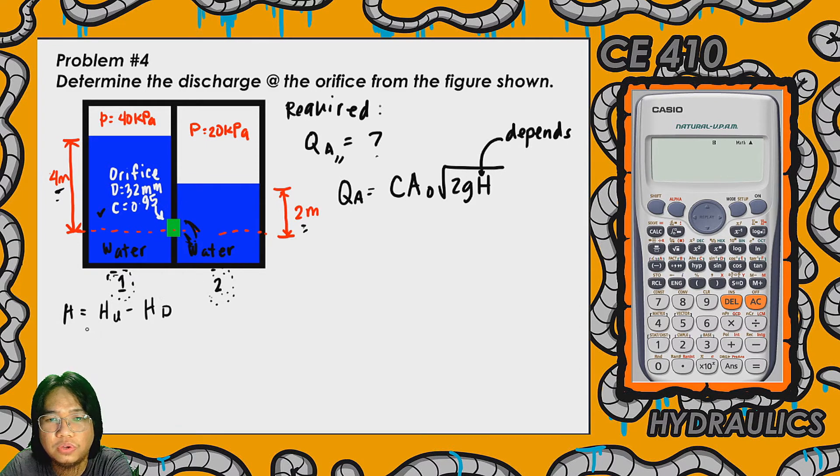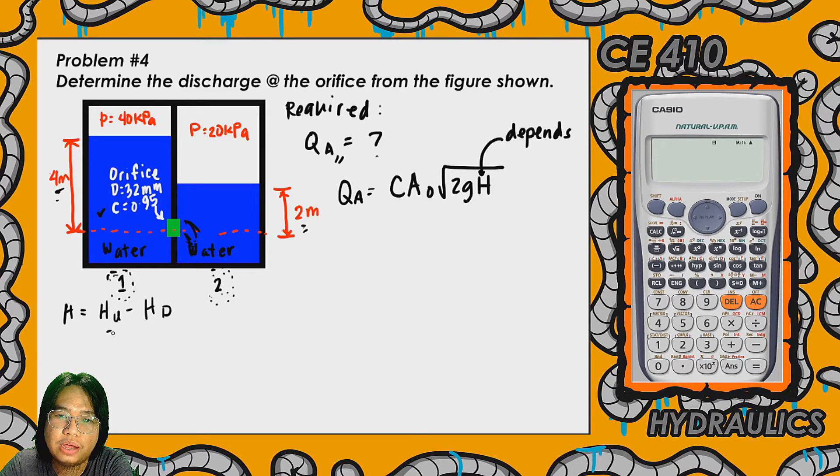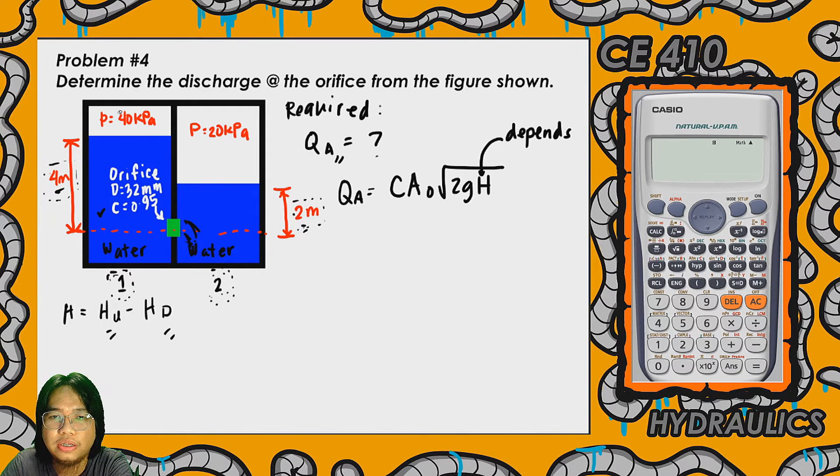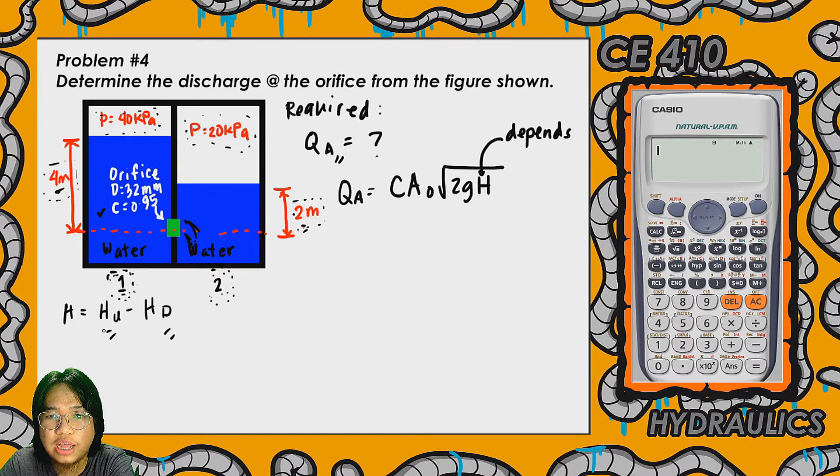If you're going to ask me, what is the basis on how we can decide which is the upstream reservoir or the downstream reservoir? Let's inspect first on the figure. Since chamber number 1 has the higher head of water compared to chamber number 2, and chamber number 1 has the greater pressure than chamber number 2, we can conclude that chamber number 1 is the upstream reservoir.